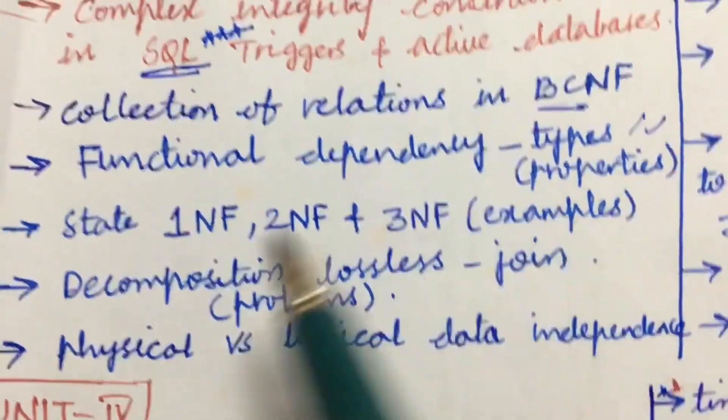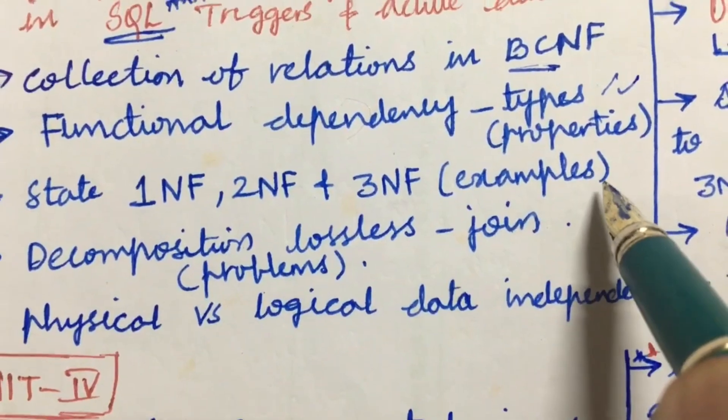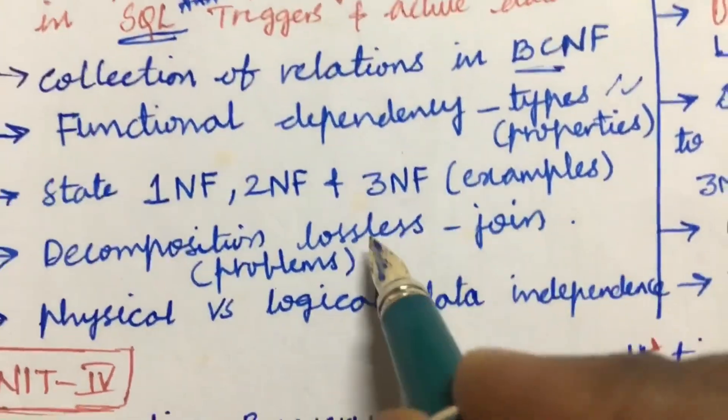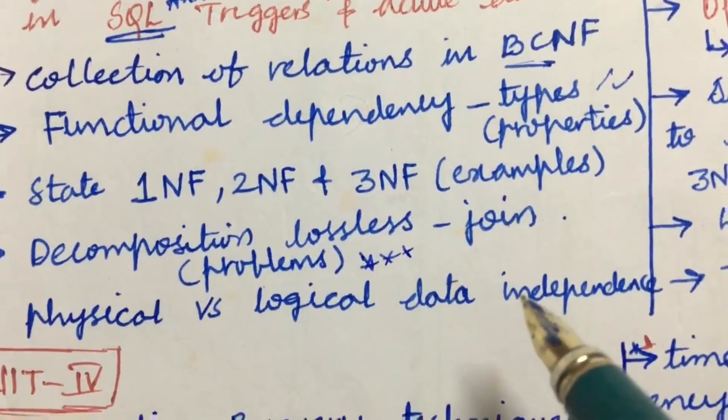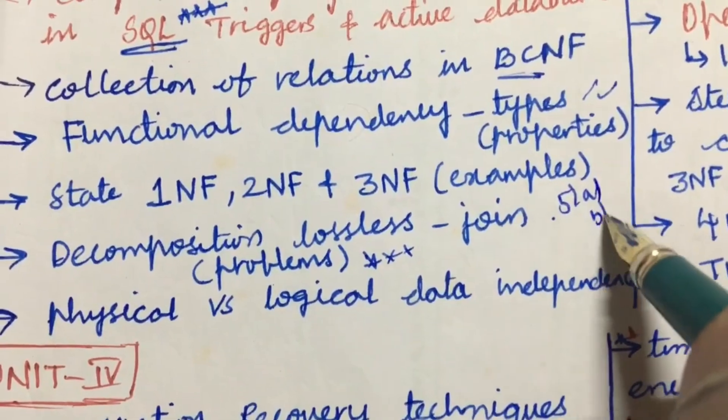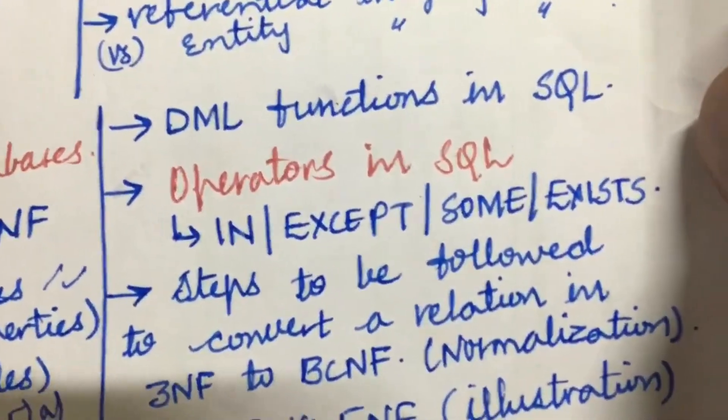State 1NF, 2NF, 3NF, normal forms along with examples, and the decomposition lossless join and the problems related to it if it is asked. Physical versus logical data independence. This is all about 5A as well as 5B, and sometimes they are asking direct 15 marks also in the course DBMS.